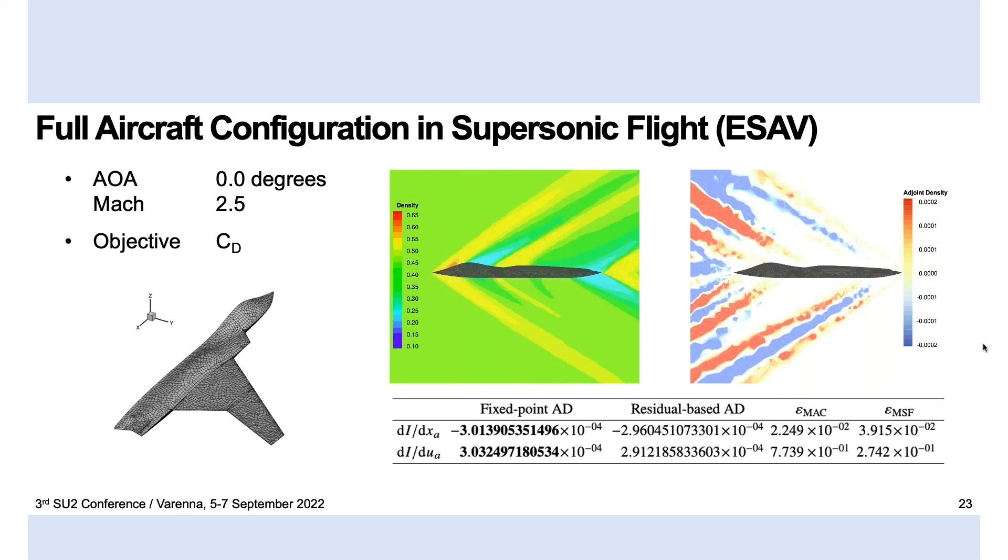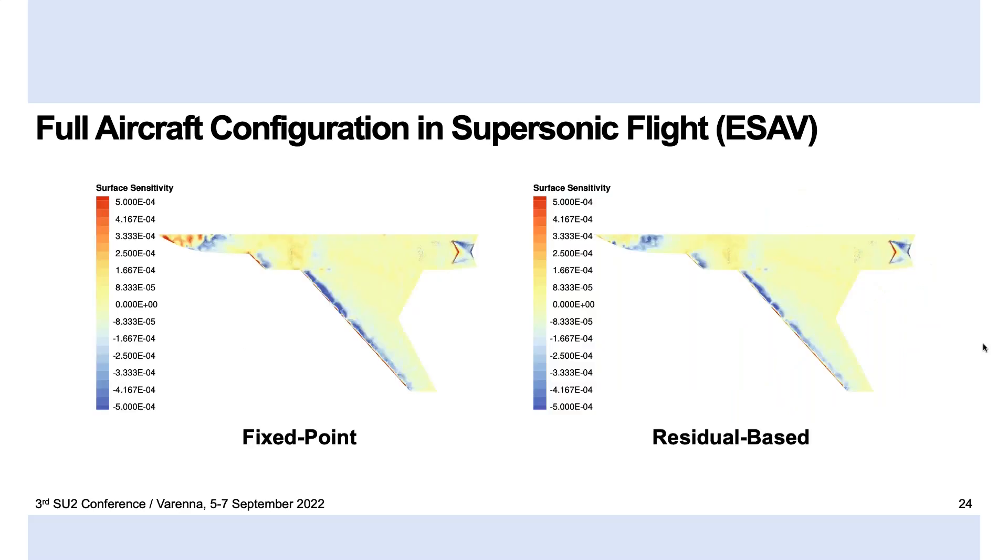And we found that while the error does deteriorate for various reasons, the adjoint solutions and especially the sensitivities match up quite well. So this is the worst case here. There are some visible qualitative differences, but this is most likely due to the fact that in the residual-based formulation, the quality of our sensitivities is very dependent on how well we converge the problem. And in this case, it does not converge so well. And so, in fact, as it becomes tougher to converge the problem, we also have more deterioration of the adjoint solution.